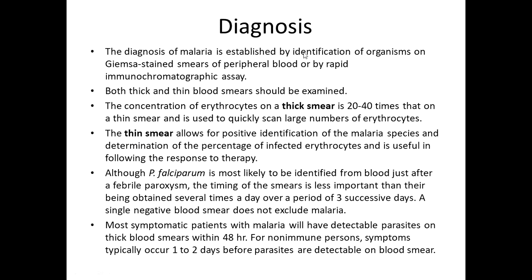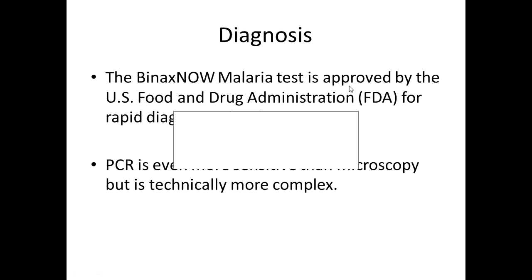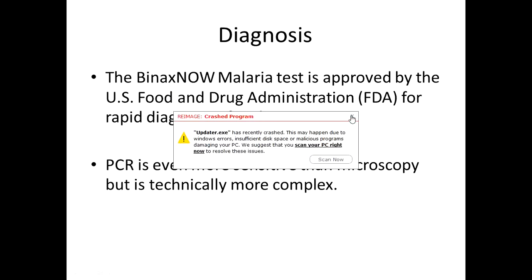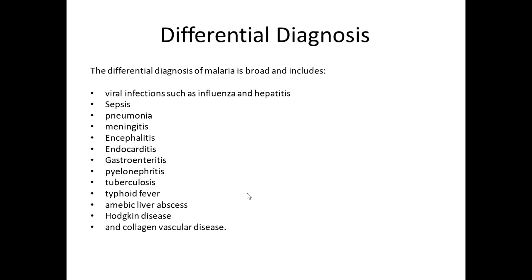Diagnosis of malaria is established by identification of organisms on Giemsa-stained smears of peripheral blood, or by rapid immunochromatographic assay. Both thick and thin smears should be examined. The BinaxNOW malaria test is approved by the U.S. FDA for rapid diagnosis of malaria. PCR is even more sensitive than microscopy but is technically more complex.